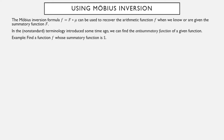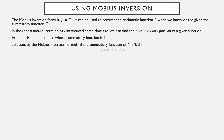Let's use this formula. We can recover an arithmetic function f when we know its summatory function. Let's find a function whose summatory function is the one function. By the Möbius inversion formula, if the summatory function of f is the one function, then f is simply the convolution of 1 with µ. Since the one function always outputs 1, f(n) is simply the sum over the divisors d of n of µ(d).